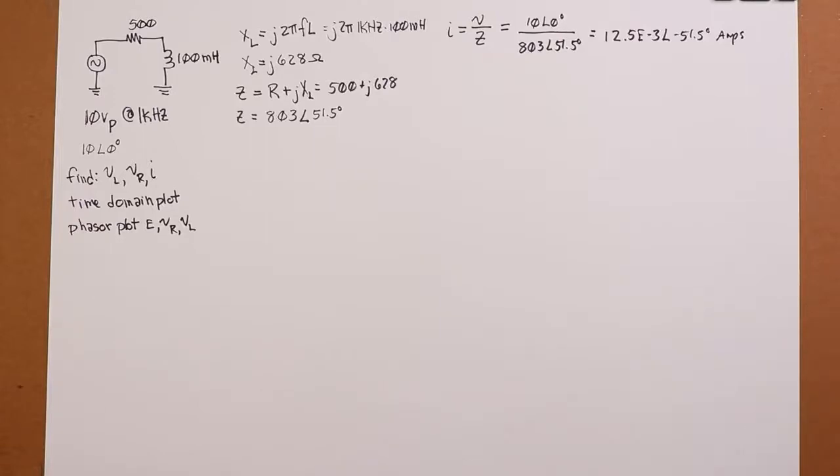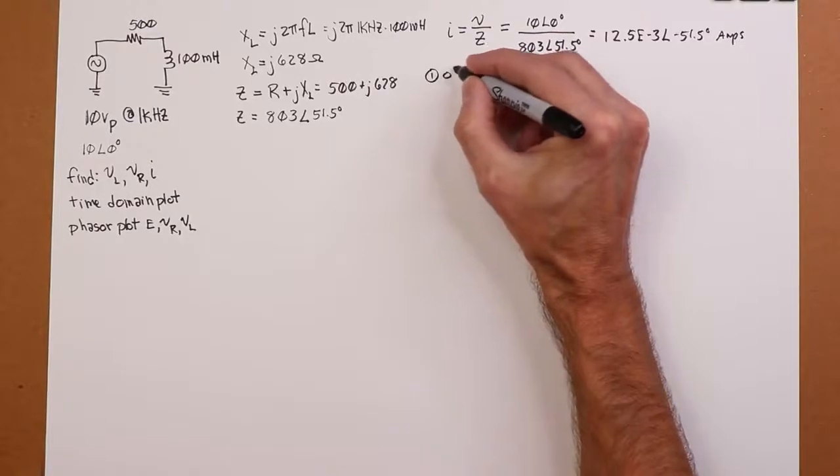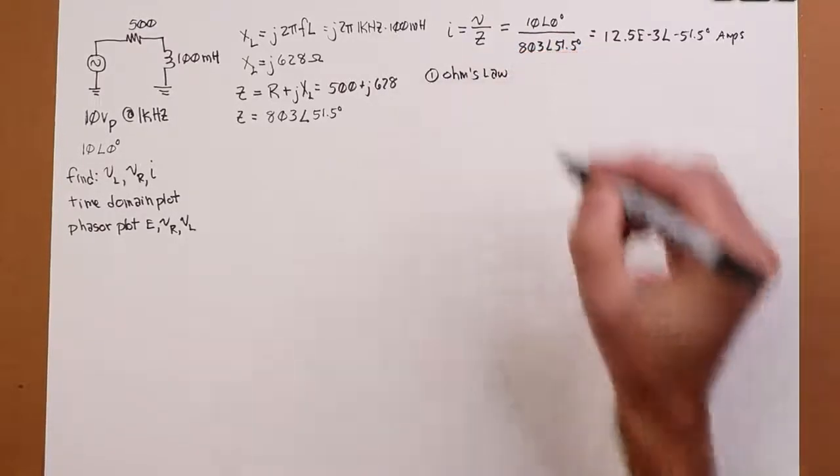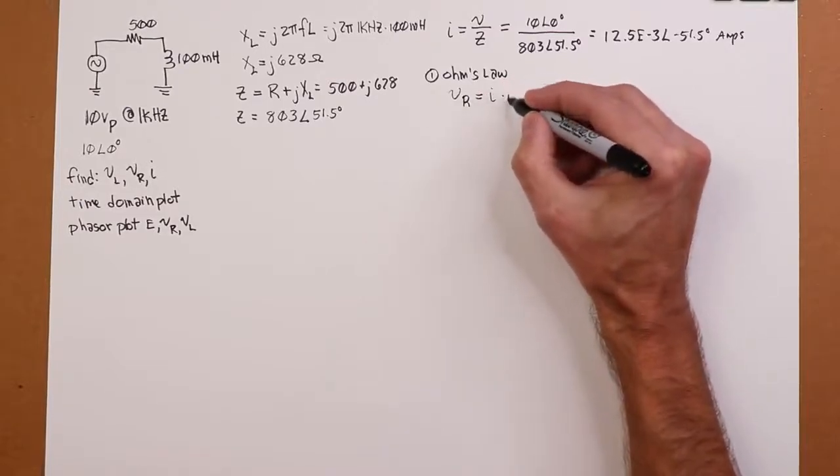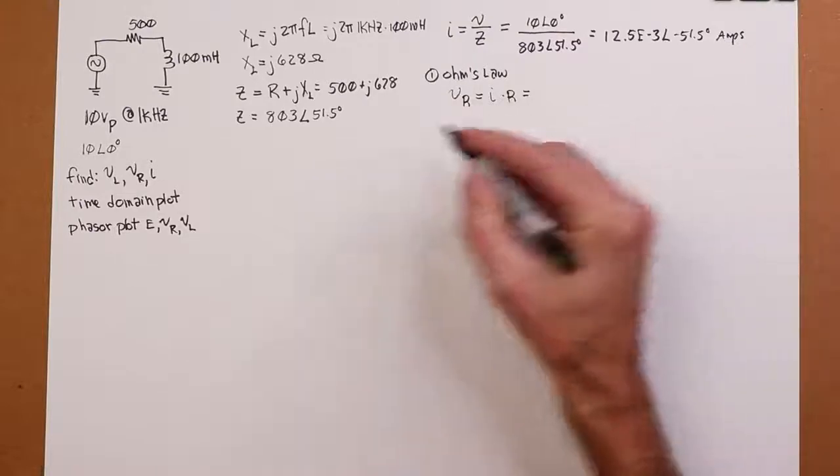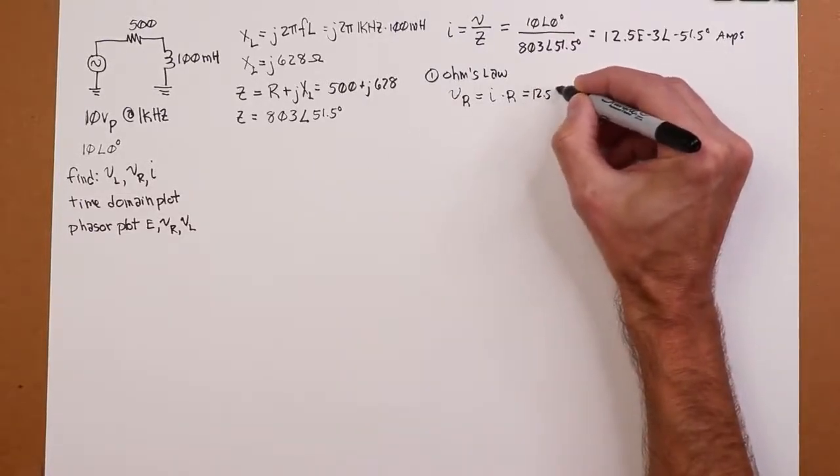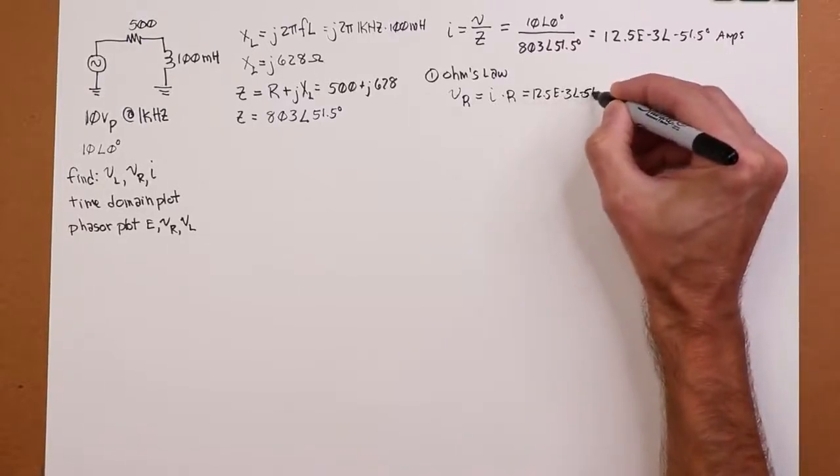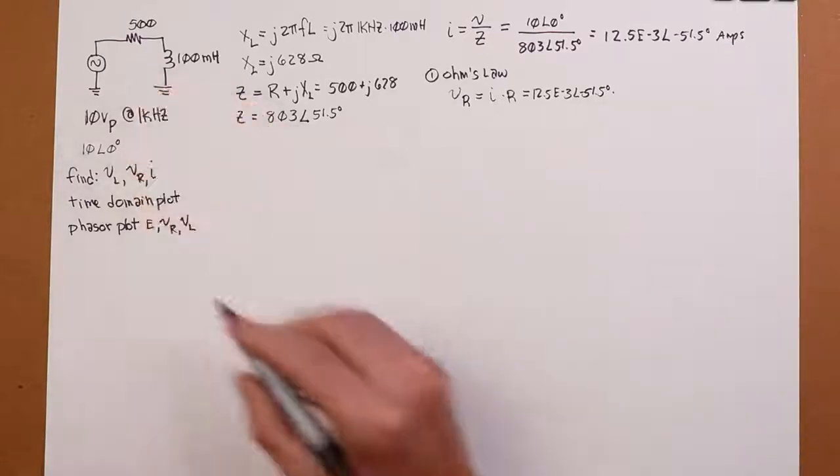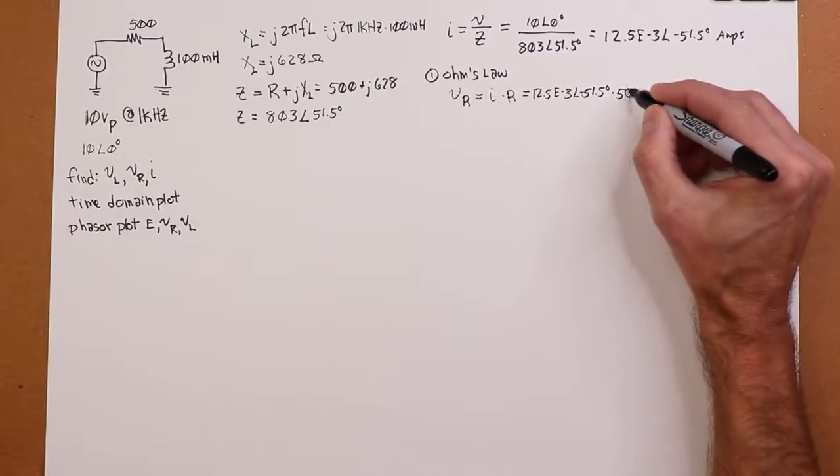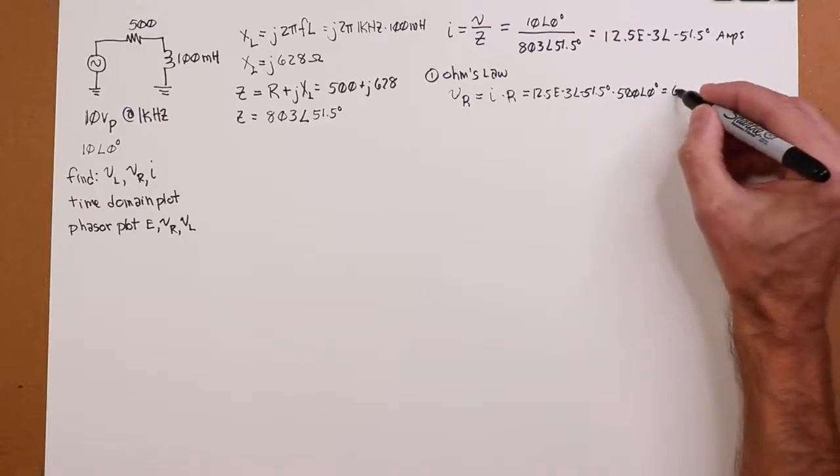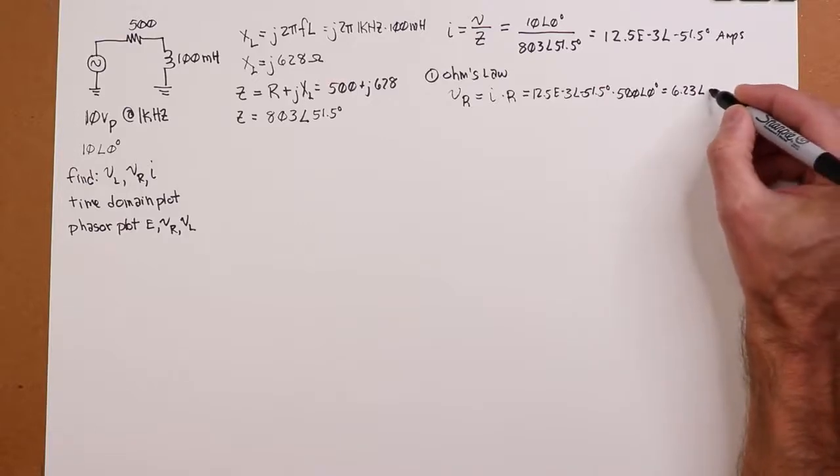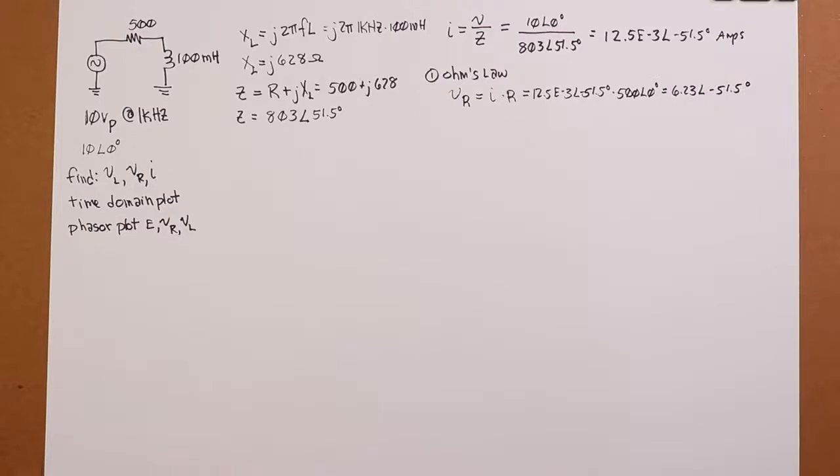Remember, in polar form, you just divide the magnitudes, 10 divided by 803, and then subtract the angle. Subtract 51.5 from zero. So that's the circulating current. So now we can use Ohm's law. This is sort of method number one, would be to use Ohm's law on this. In other words, we could say that voltage across the resistor would have to equal the current times the resistance. So the current we know is 12.5 mils, and the resistance value is 500 ohms. So that's 500 at an angle of zero. And when we crank that out, we're going to get 6.23 at an angle of negative 51.5 degrees.